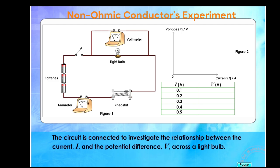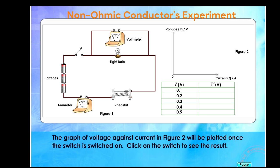The circuit is connected to investigate the relationship between the current I and the potential difference V across a light bulb. The graph of voltage against current in figure 2 will be plotted once the switch is switched on. Click on the switch to see the result.